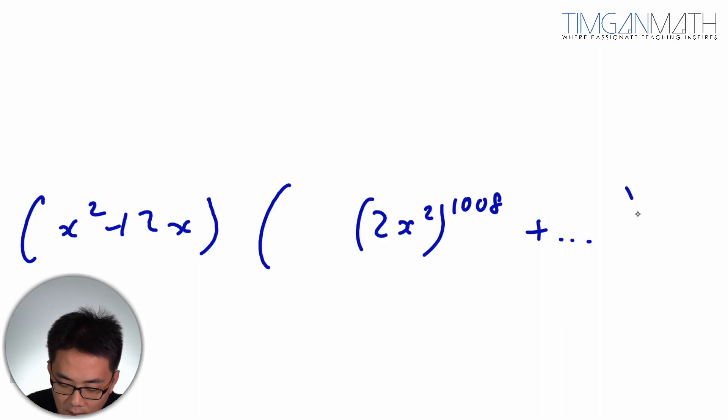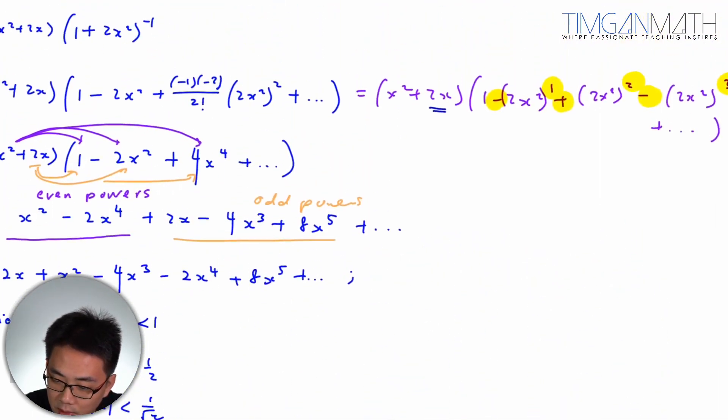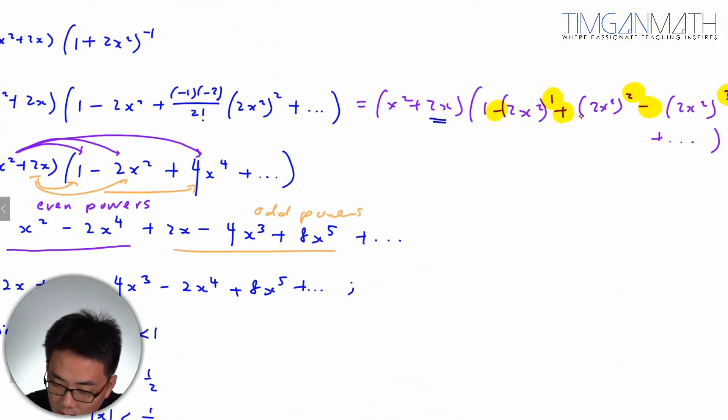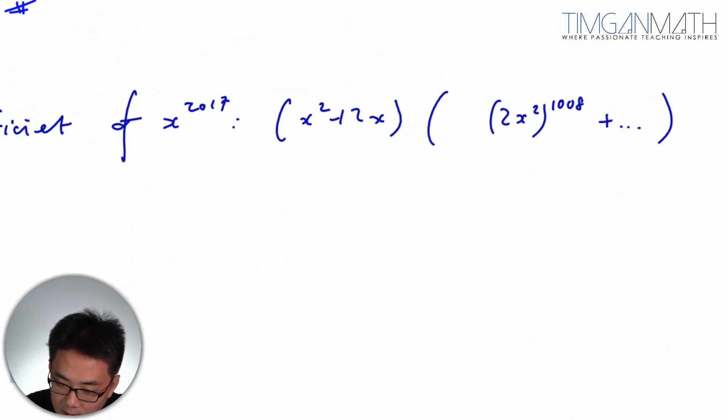And 1008 will mean that this is actually even, so this will be a plus. That is the important part.